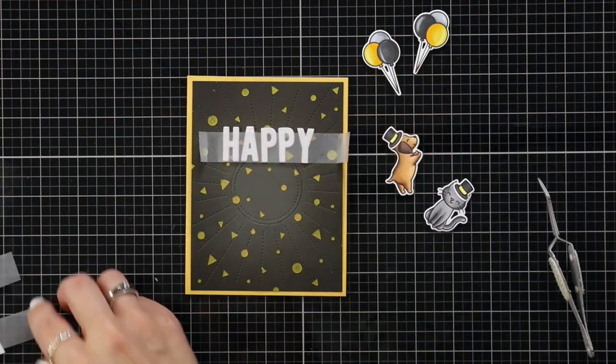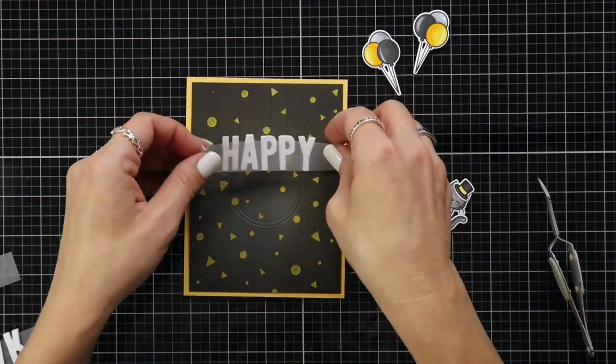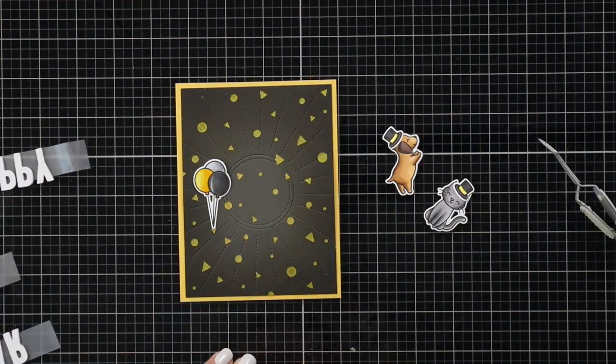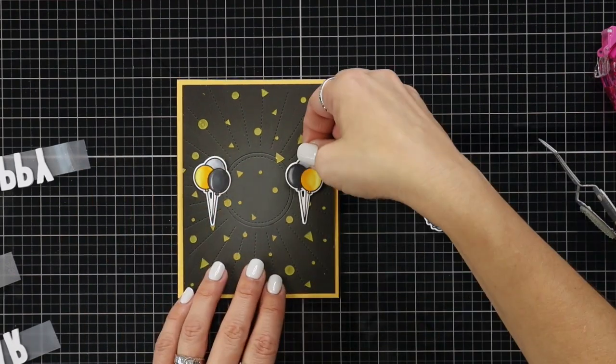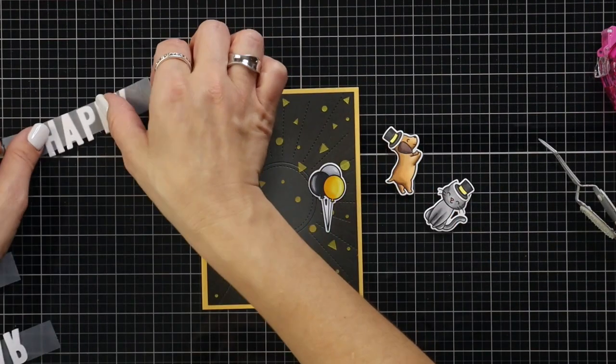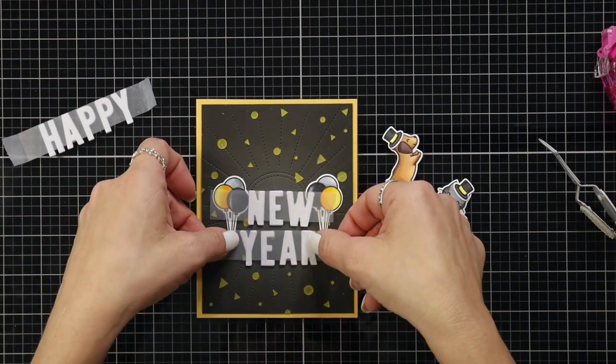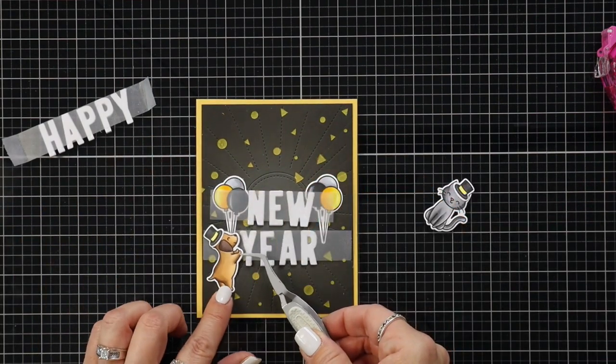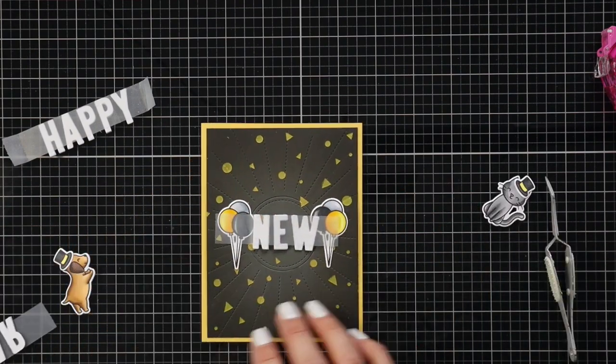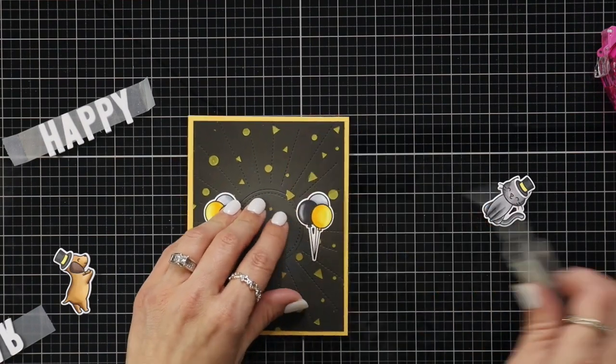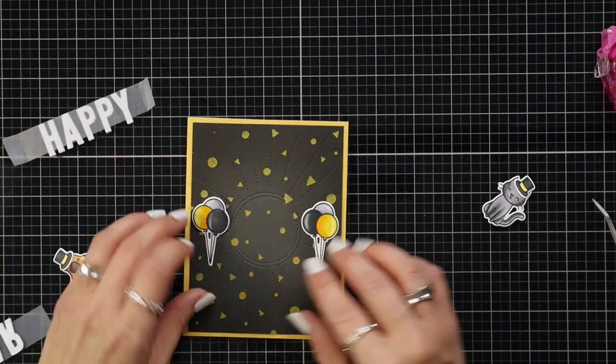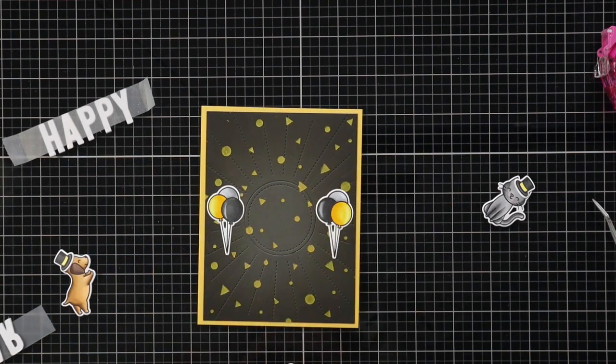I added the top hats to the dog and the cat because I thought that was just super adorable. And then once I figure out about where my sentiments are going to go I'm going to add tape runner to the balloons and place those on the front of the card. I did end up kind of shifting the balloons over just a little bit because where they're going to be attached was just almost too close to the words and that's also why I have the scotch tape over those words. It's really helping me line everything up and get it in perfect placement.